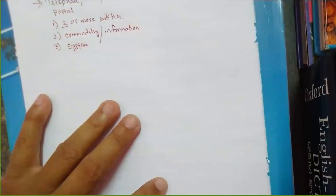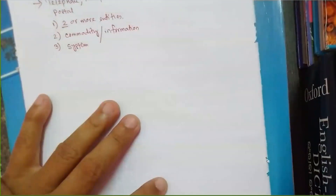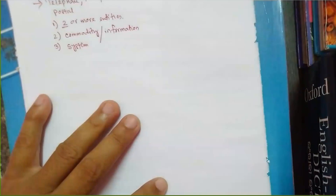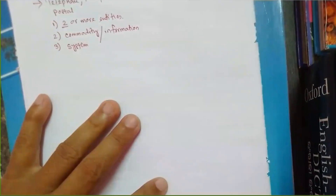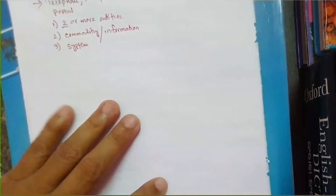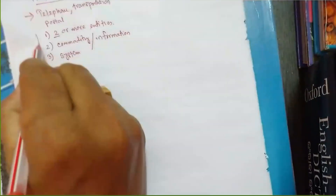If I talk about a transportation network, what is the system? The vehicle, the road — combining these, I can say it is a system. If I talk about a postal network, the system is the post office. If I write a letter but there is no postal system available, I can't send it. So the postal system is required to carry out this communication. So if I look into a computer network, these three basic requirements must be taken care of.